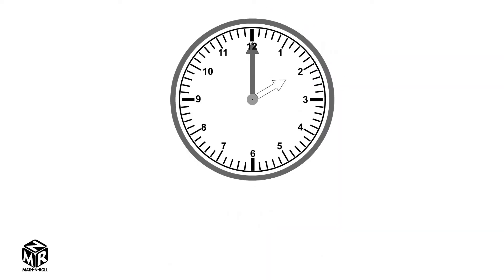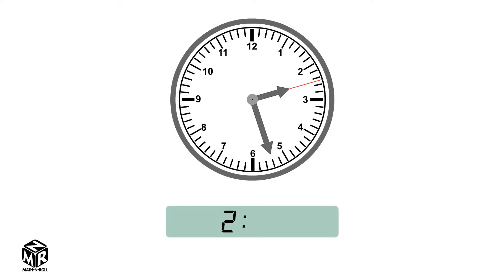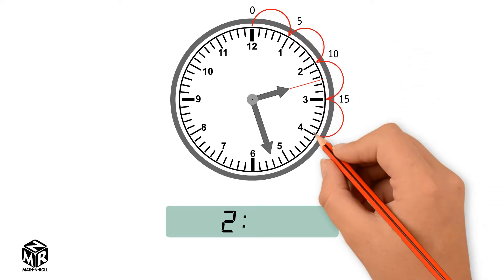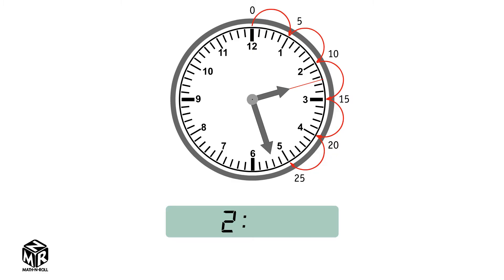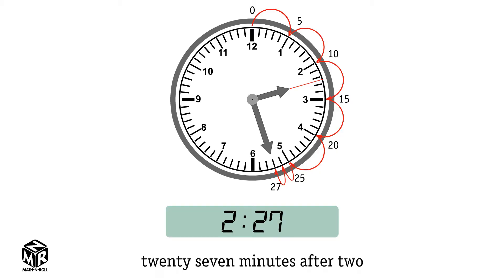Let's try another example. The hour hand points after 2, so the hour is 2. Now let's check the minute hand — it points after 5, so let's count by 5s: 0, 5, 10, 15, 20, 25. Now let's count by 1s to get to the mark. The minute hand points to 27, so the time is 2:27, or 27 minutes after 2.